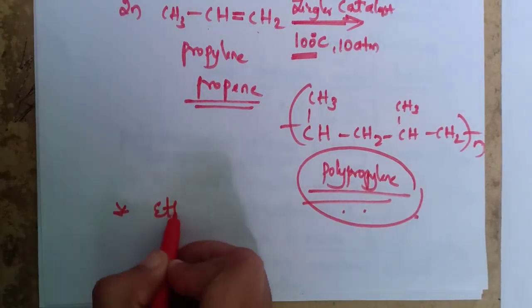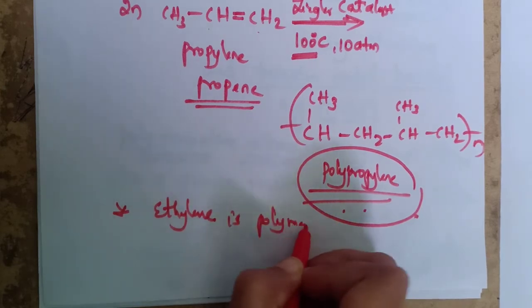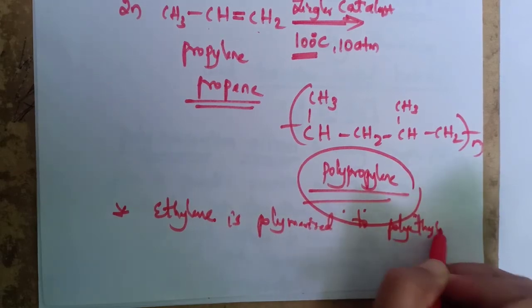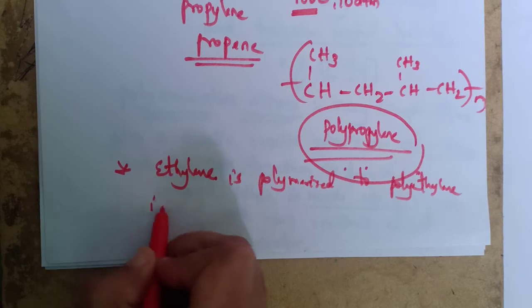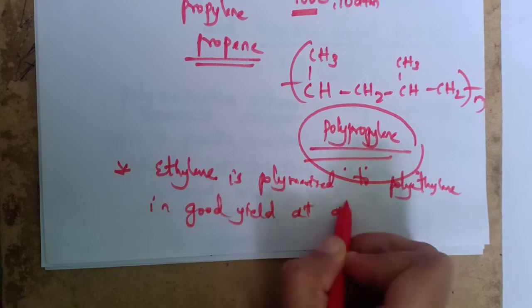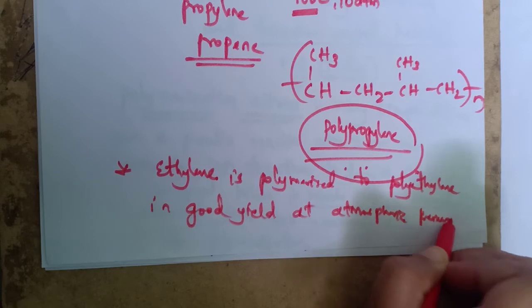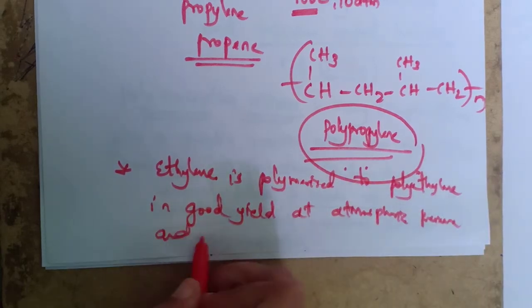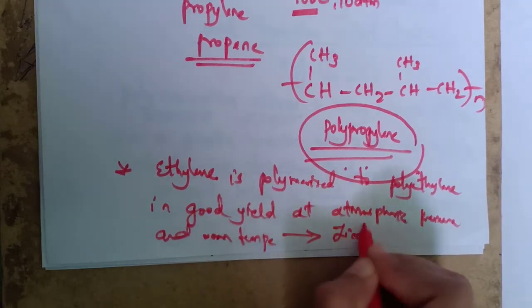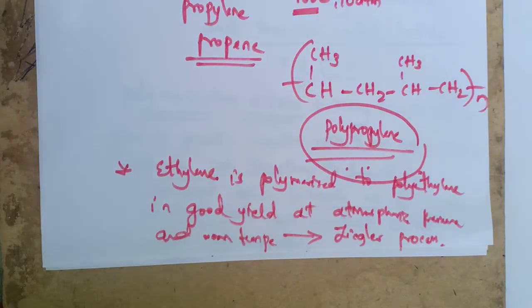Another example is ethylene, which is polymerized to polyethylene in good yield at atmospheric pressure and room temperature by use of the Ziegler process.